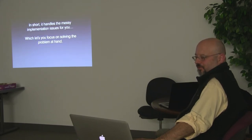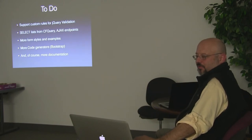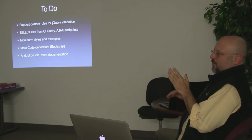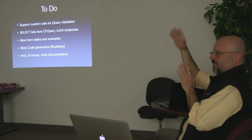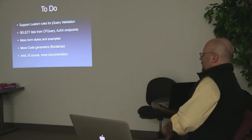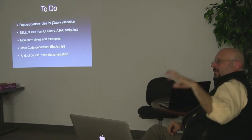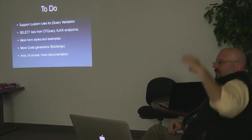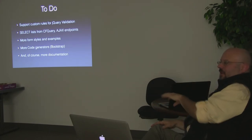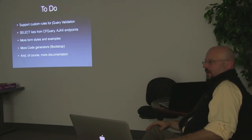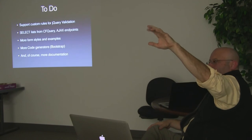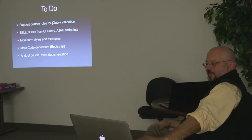So it handles implementation issues so you can focus on the problem. I want to do custom rules for jQuery validation. It needs to be able to reach out to other objects for endpoints for select lists, like lists of states or cities. The versions prior to this know about a dispatcher I have globally in most of my applications, so I can say display this query from this object and it knows how to go out, find it, instantiate it, get the query out, and display everything in the list. More form styles, more code generators like Bootstrap, and of course more documentation.